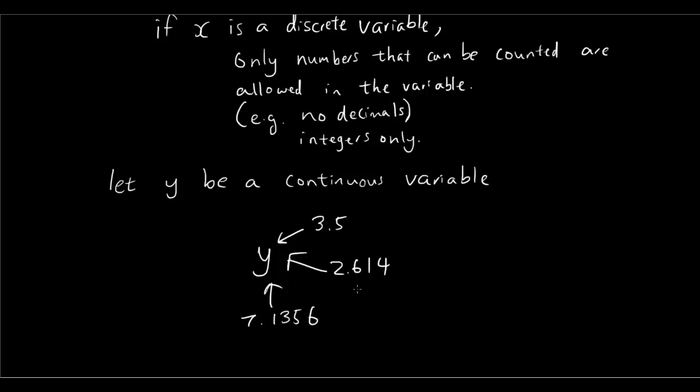Basically any number that you want. You can put in whole numbers if you want as well. So basically a continuous variable is one that you can take on any number is allowed in the variable. So that is the difference between a discrete or a continuous variable.